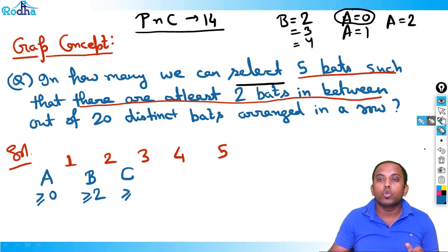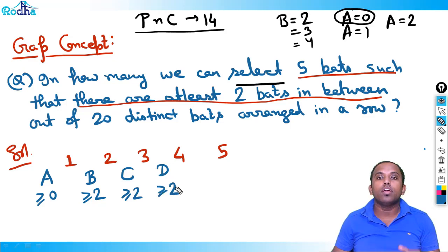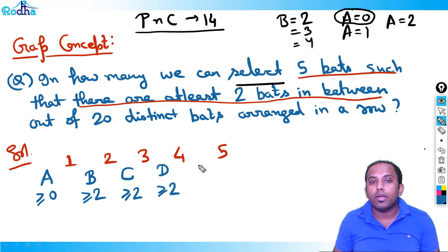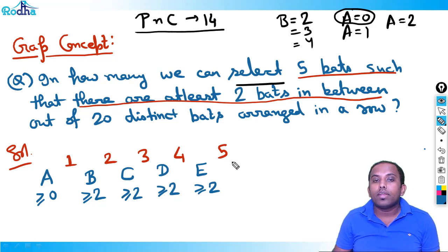Similarly, C is the number of bats between second and third bat, so C is greater than or equal to 2. D is the number of bats between third and fourth bat, so D is greater than or equal to 2. E is the number between fourth and fifth bat, so E is greater than or equal to 2. And after the fifth bat, let's say there are F bats.